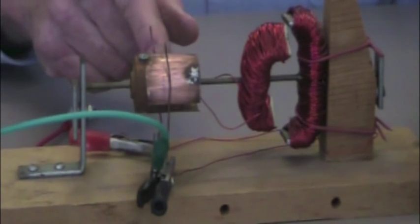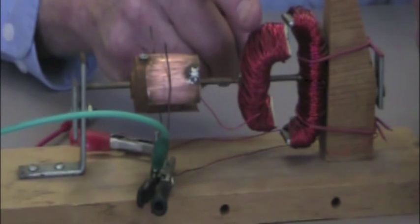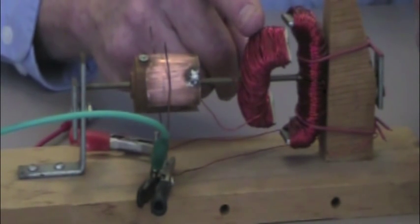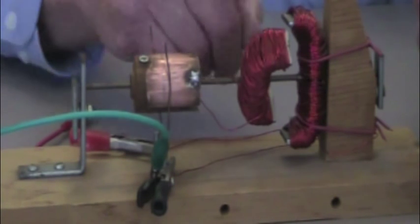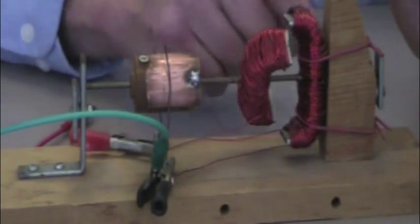Now the electricity is going in the opposite direction, so the polarization of this electromagnet is opposite of what it was a minute ago. This stays constant, so opposite poles here attract each other.